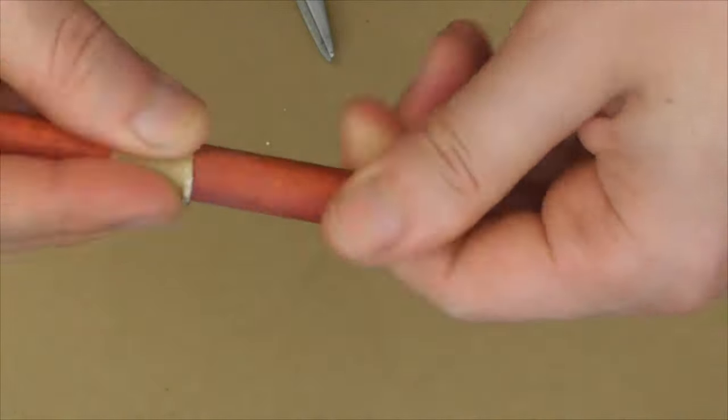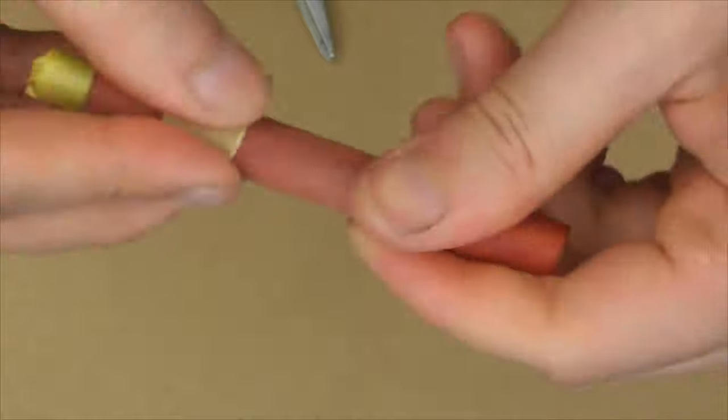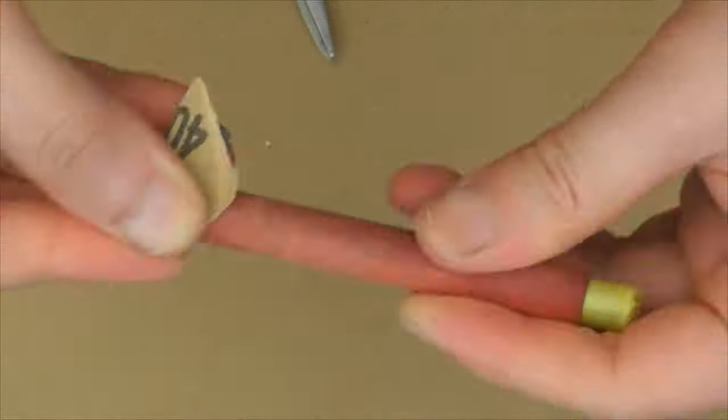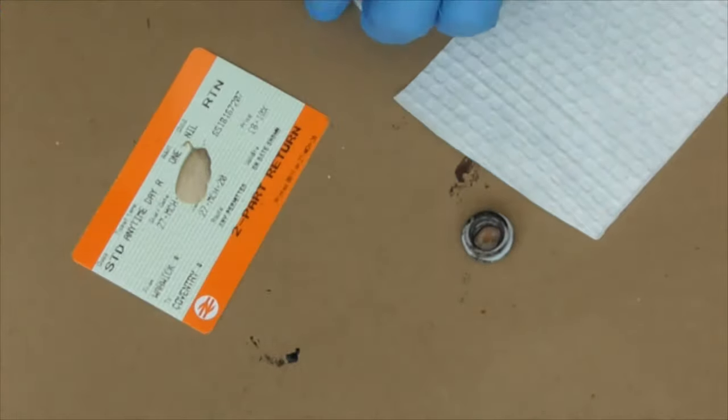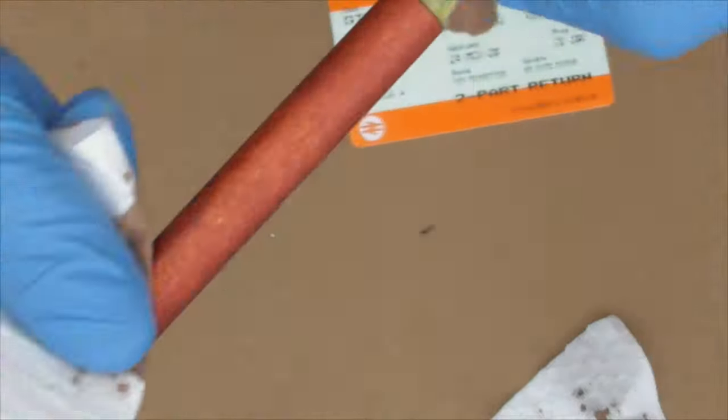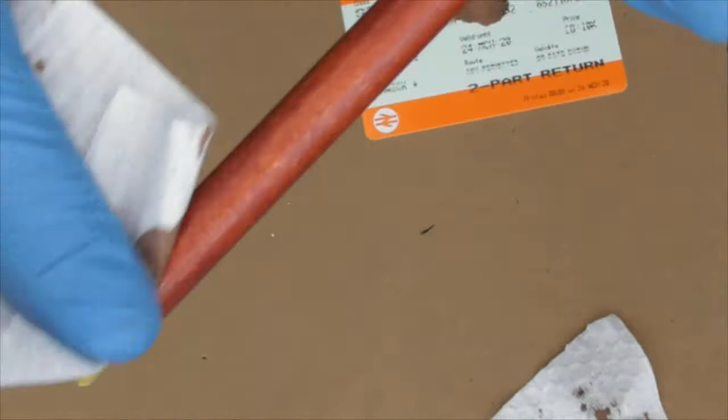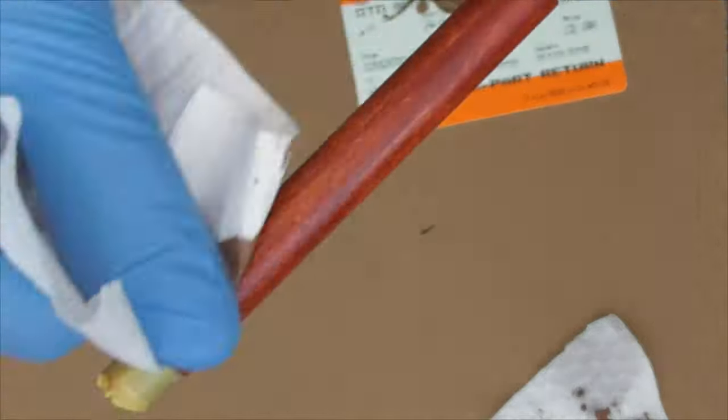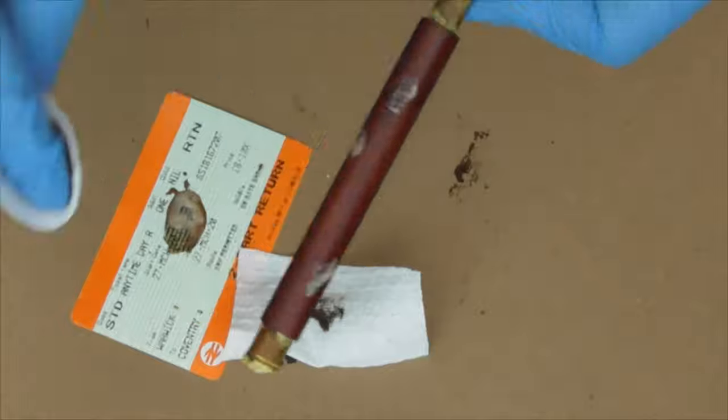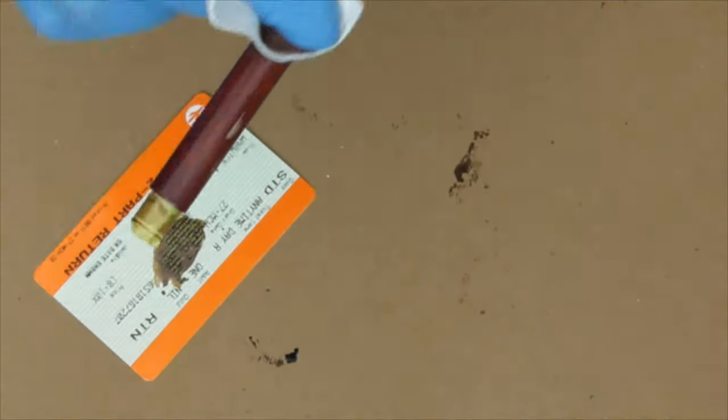Lightly sand the barrel with 400 grit sandpaper. Apply a thin layer of Kijomi Urushi. I am using a lint-free cloth. Repeat this step for 3 times. Allow at least 12 hours to cure for each layer.